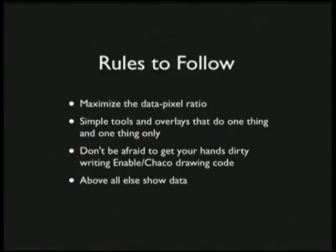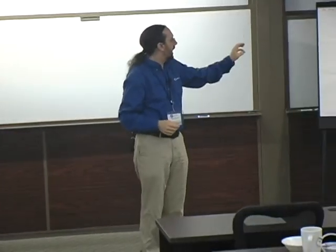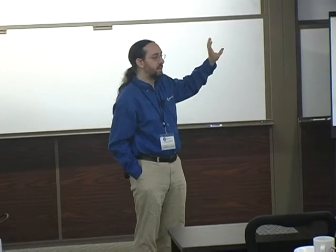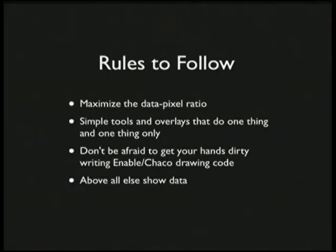To summarize: maximize your data-pixel ratio. Use simple tools and overlays and try to make them do one thing and one thing only. For any complex interactions, put those into a pure model object which doesn't know anything about the UI — for instance, handling the constraint that the low value shouldn't be bigger than the high. Don't be afraid to get your hands dirty — it's not that well documented, but it's not too hard to get down to the level of writing Enable and Chaco drawing code. And above all else, show the data. It's all about communicating and allowing your users to interact with your data.